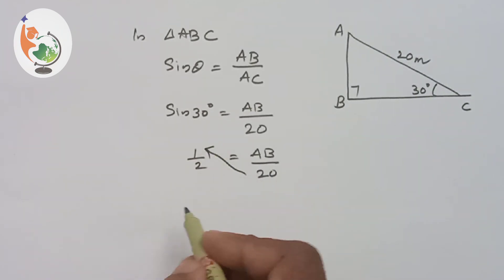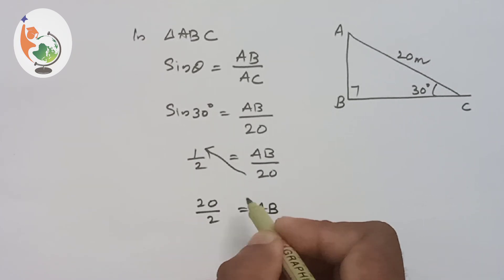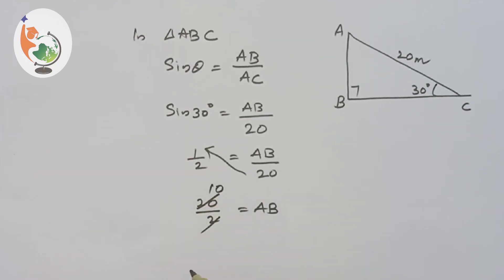So 20 will come here. 20 by 2 is equal to AB. That is 10. That is length of AB. Length of AB is equal to 10 meters. So we can conclude the height of the pole is 10 meters.